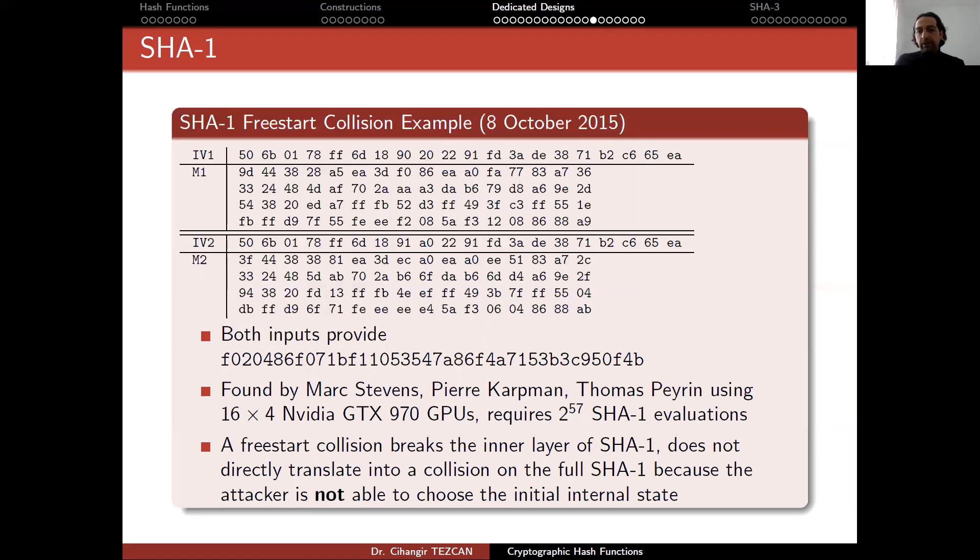A free-start collision breaks the inner layer of SHA-1. It does not directly translate into a collision on the full SHA-1 because the attacker is not able to choose the initial internal state. But the important thing here, the team was trying to show is that they found this attack with this many operations. They said that if they have more GPUs and more time, they can find a collision to the full SHA-1.